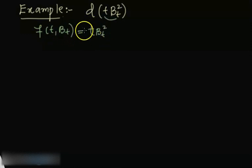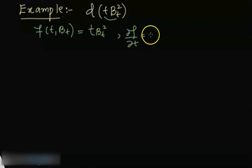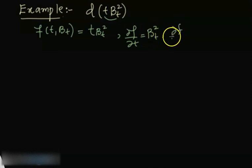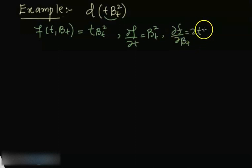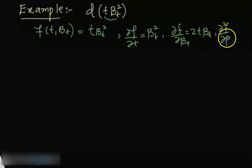Now I need to compute its partial derivatives. The partial derivative of f with respect to t is β_t squared. The partial derivative of f with respect to β_t is 2t times β_t. And the second partial derivative of f with respect to β (Brownian B) is 2t.